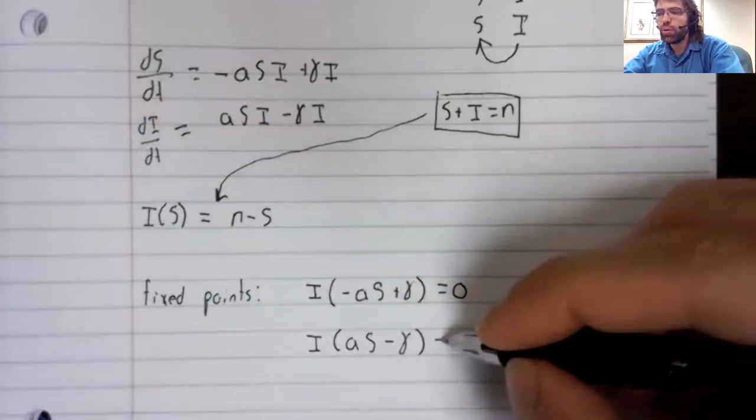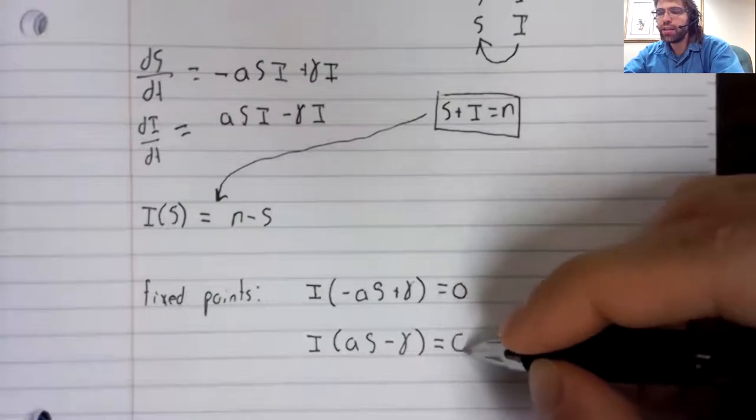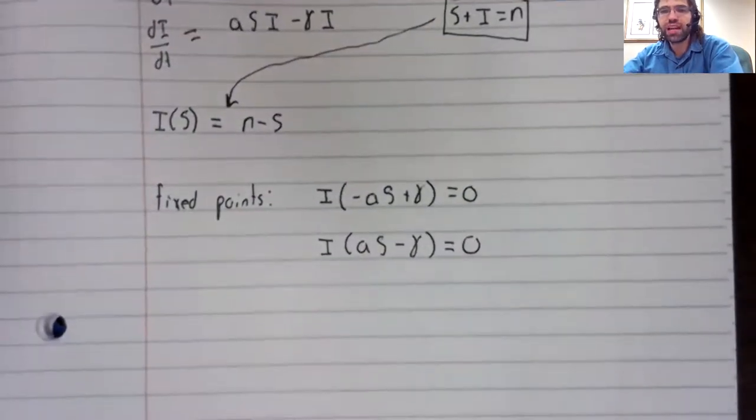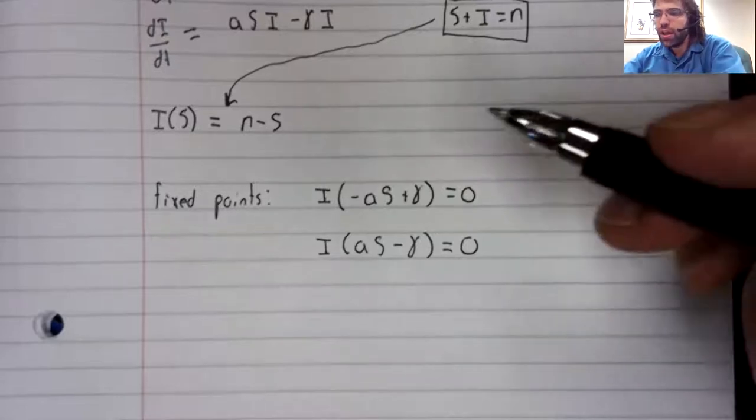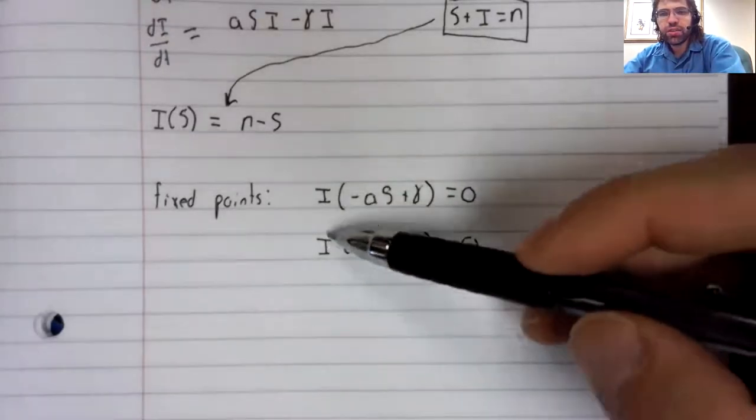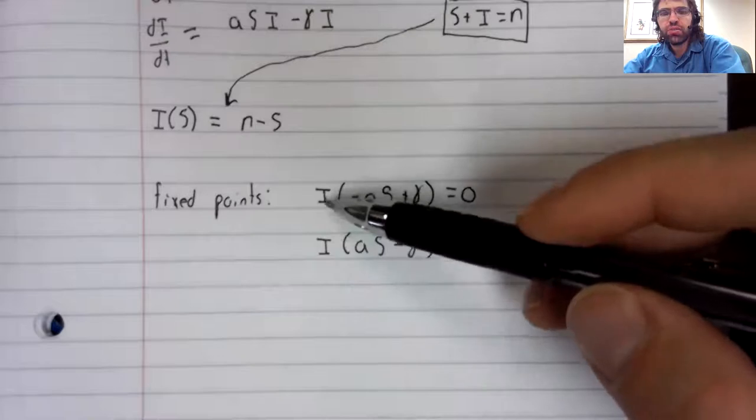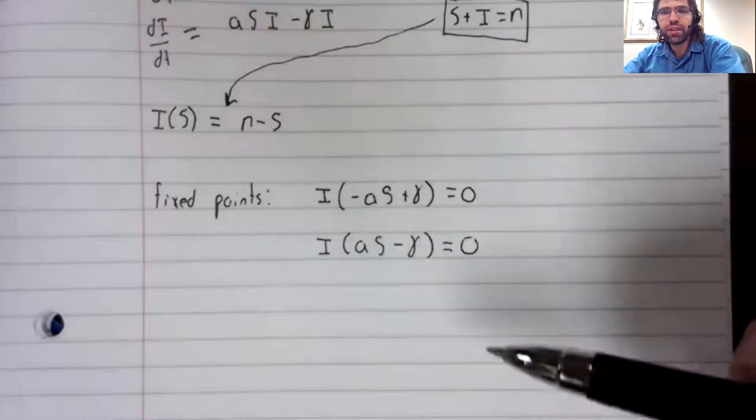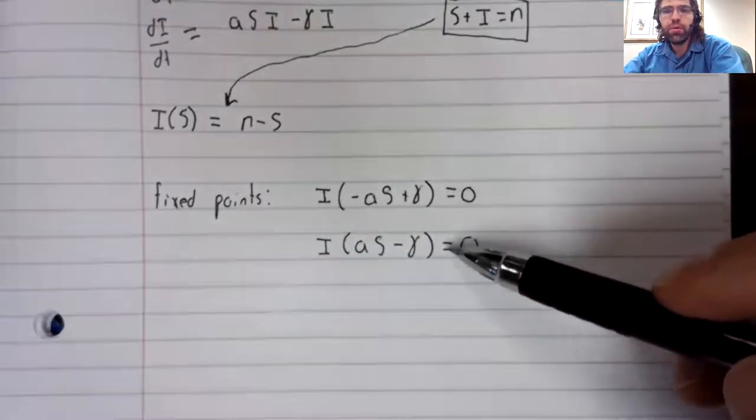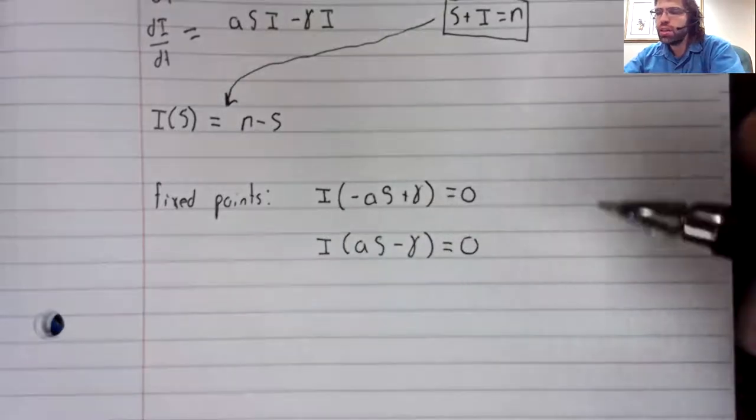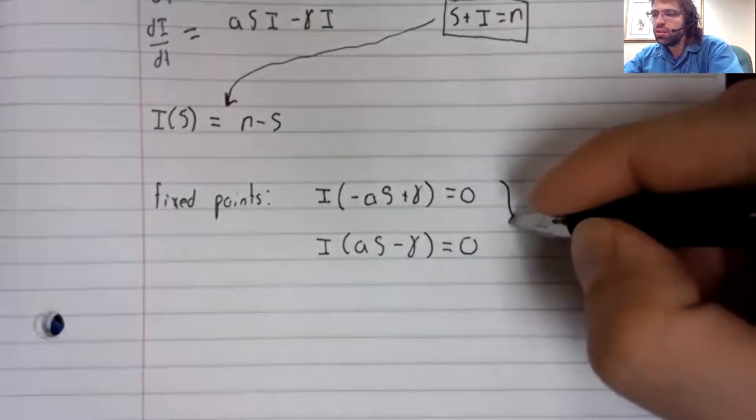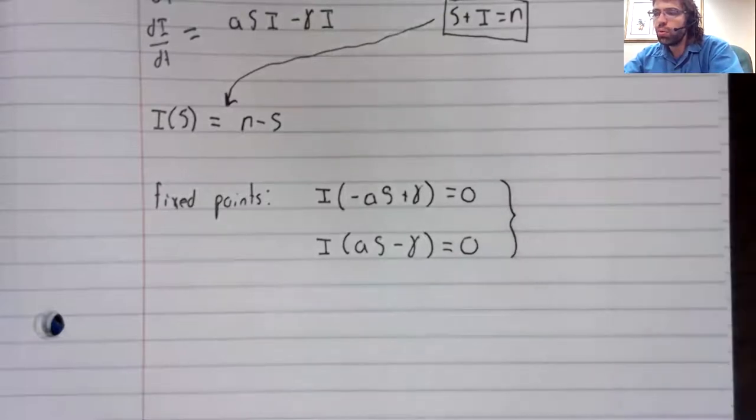I'm going to pull an I out of both of the expressions. And doing that, the first thing I observe is that if I were zero, if there were no infected people, both of these equalities would hold.